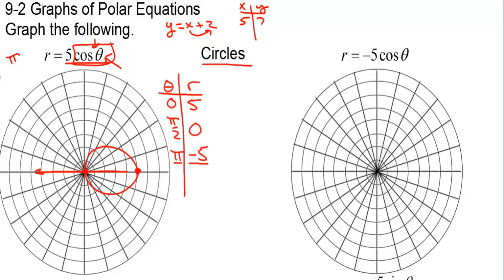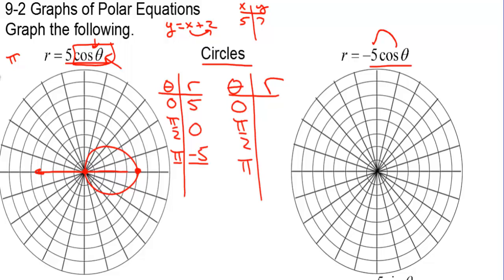When we have r equals negative 5 cosine of theta, we're going to be on the left side of the x-axis. Let's pick our thetas: 0, pi over 2, pi. Cosine of 0 is 1, but then 1 times negative 5 is negative 5. Cosine of pi over 2 is 0, and cosine of pi is negative 1; negative 1 times negative 5 gives us 5. At theta equals 0, r is negative 5, so we go in the opposite direction. Pi over 2 is 0, completing half the circle. At pi, we're back at 5 — back where we started. There's the full circle, and it only takes pi radians to graph the entire circle.